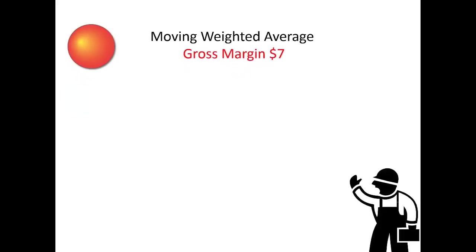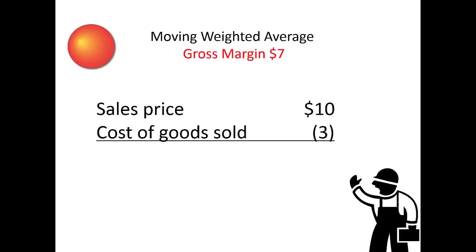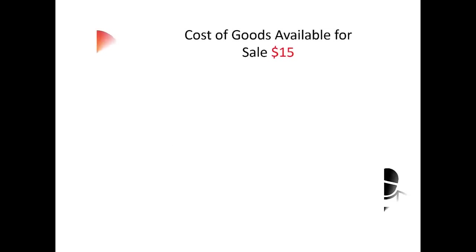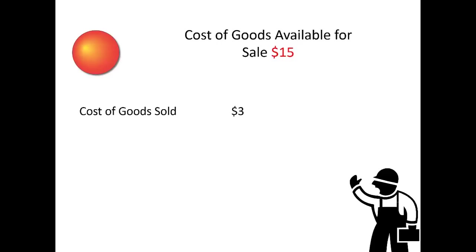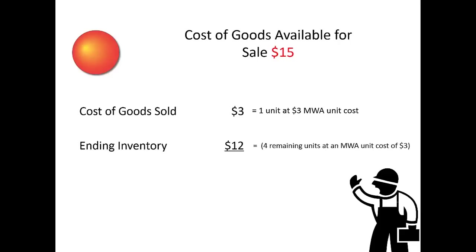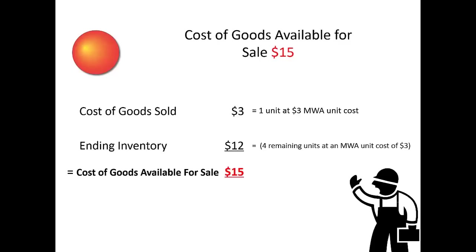Moving Weighted Average's gross margin turns out to be $7: sales price of $10 less cost of goods sold of $3. The original cost of goods available for sale of $15 reconciles as: cost of goods sold of $3 (one unit at $3) and ending inventory of $12 (4 remaining units at an average cost of $3 per unit), equaling total cost of goods available for sale of $15. Cost of goods sold was $3; ending inventory is $12.